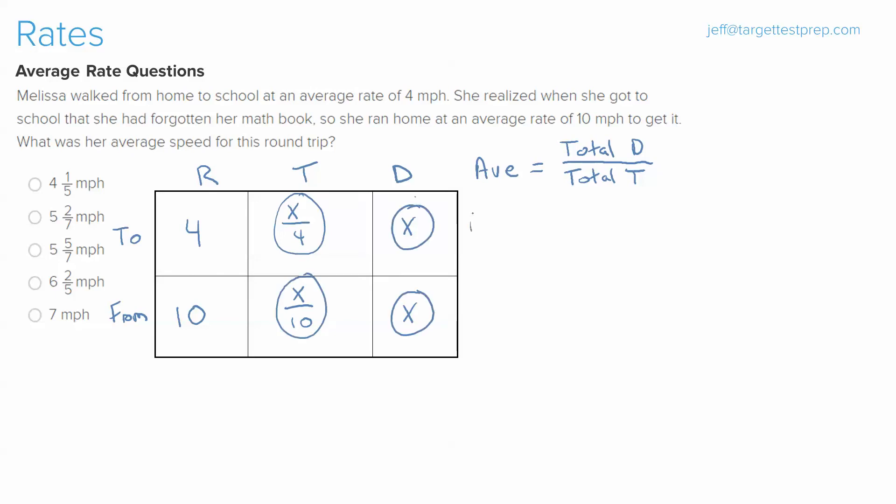So we can say that average equals total distance, which is distance 1 plus distance 2, or x plus x, which we'll say is 2x, over total time, which is x over 4 plus x over 10.